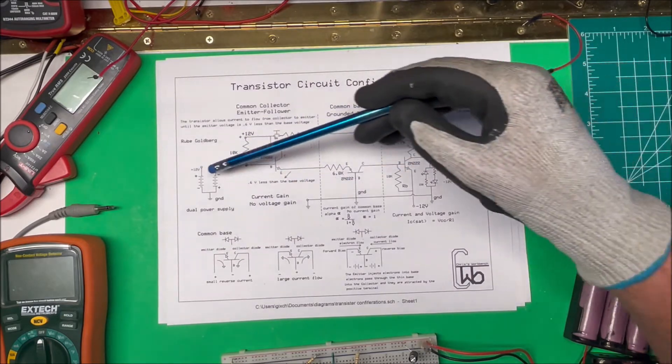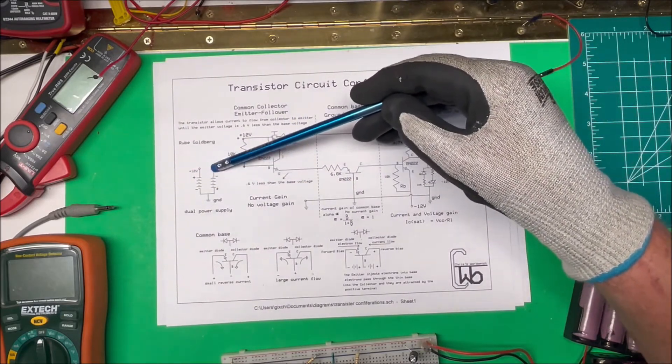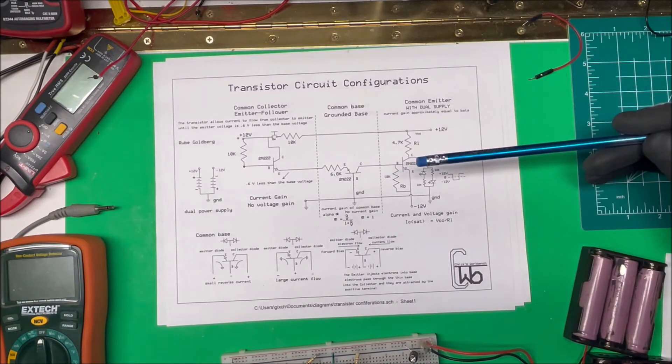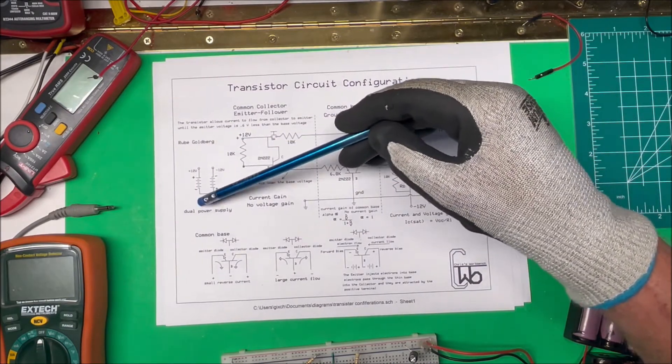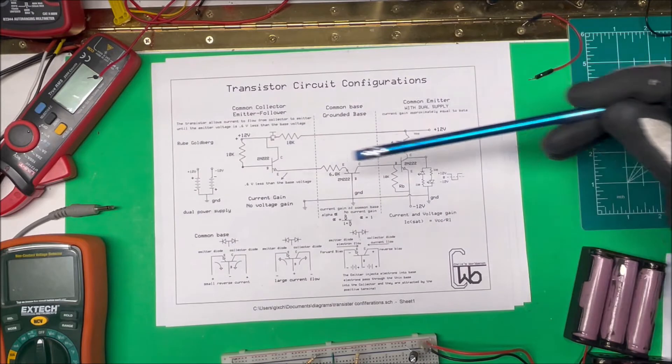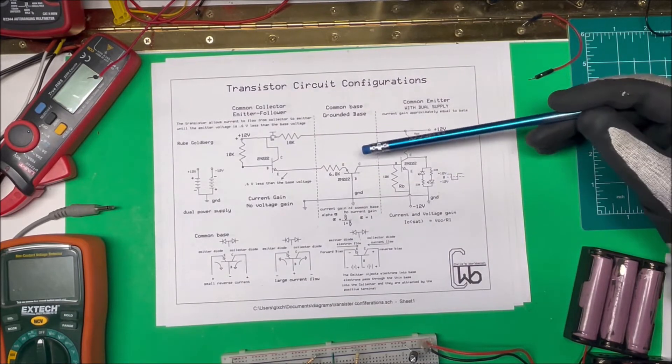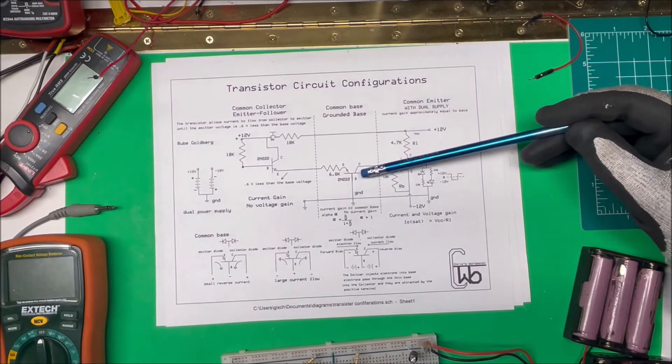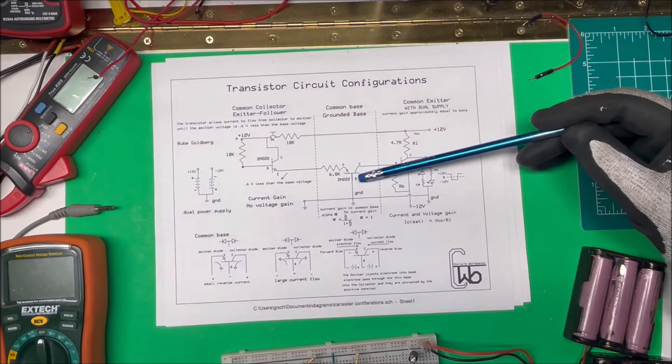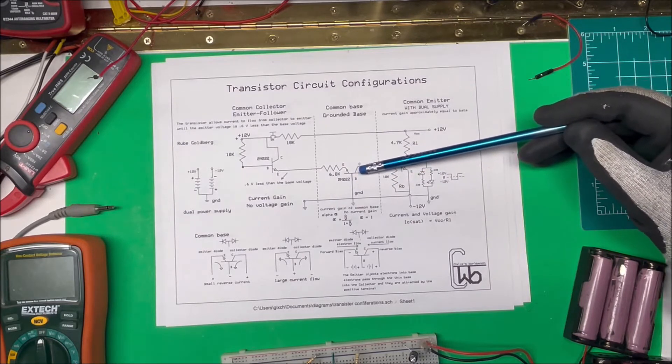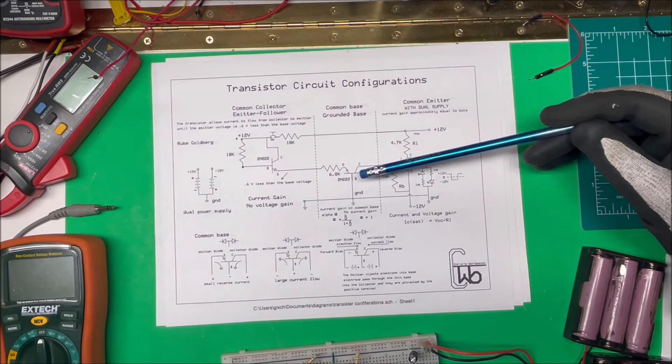These happen to be 12 volts, so from here to here I'm going to have 24 volts, and from here to here I'll have 12 volts and from here to here I'll have 12 volts. This will be negative, this will be positive, and then on this side this is positive and negative here. So that's what I'm using for this common base.